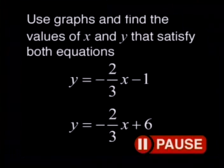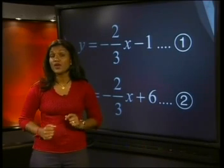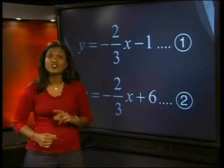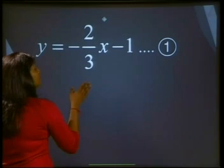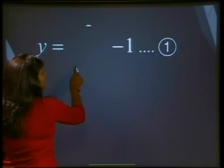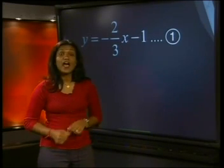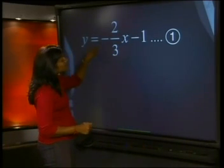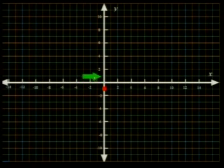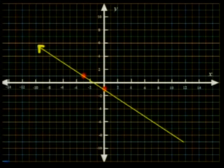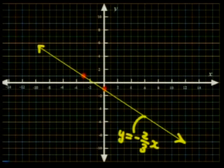Use graphs to find the values of x and y that satisfy both equations. Both equations are already in the form y = mx + c, so we can plot the graphs directly. In the first equation, the y-intercept is where x = 0, meaning y = −1. To find another point, I use the gradient, which is negative 2/3. Since the gradient is negative, we move two units up and three units to the left. We mark this point and join it to the y-intercept, labelling the line y = −2/3 x − 1.